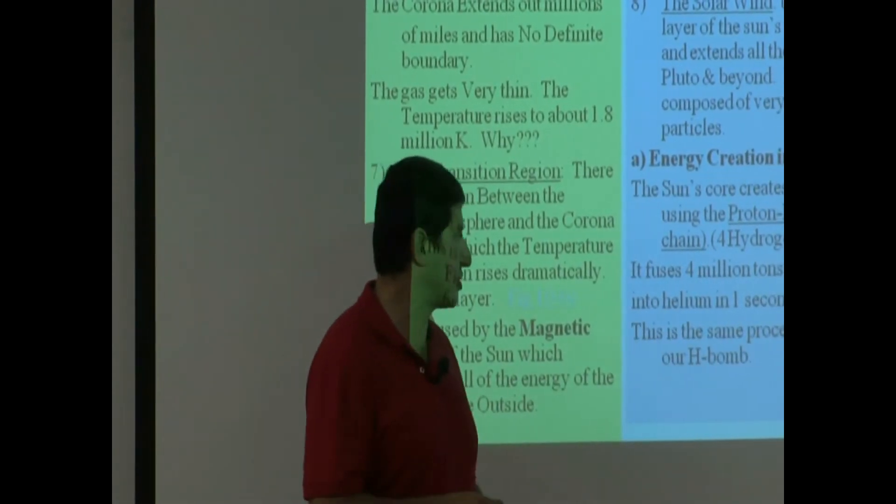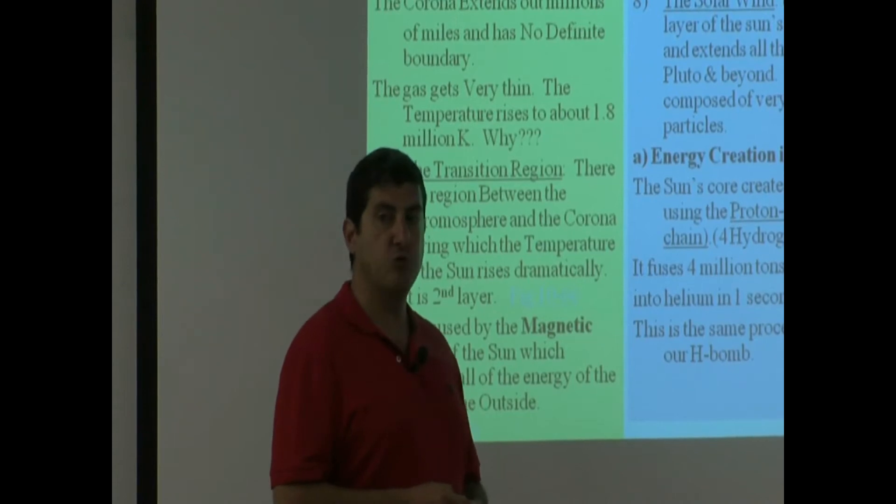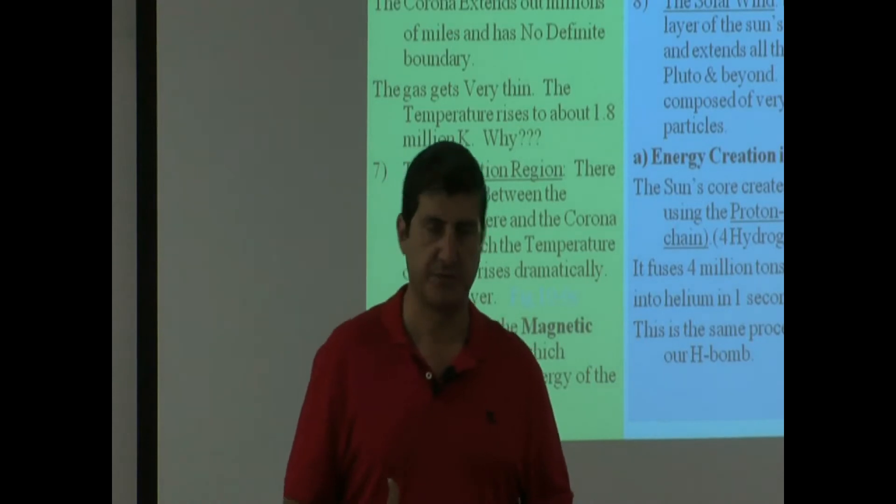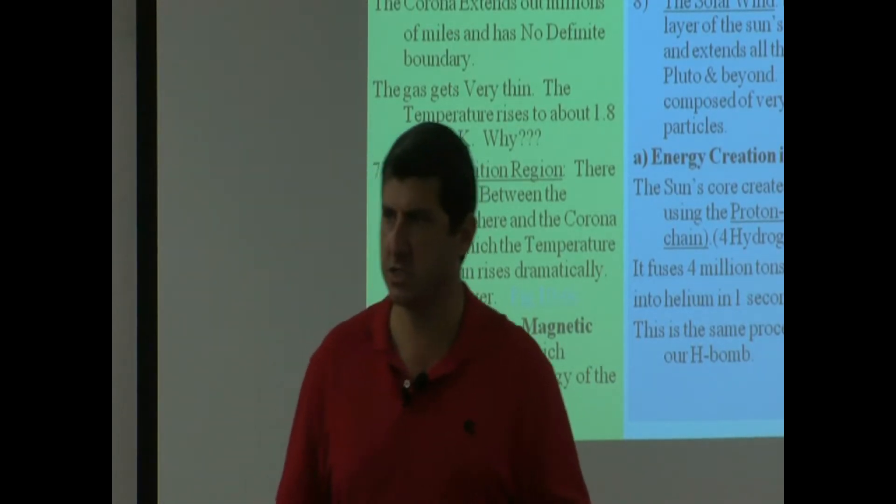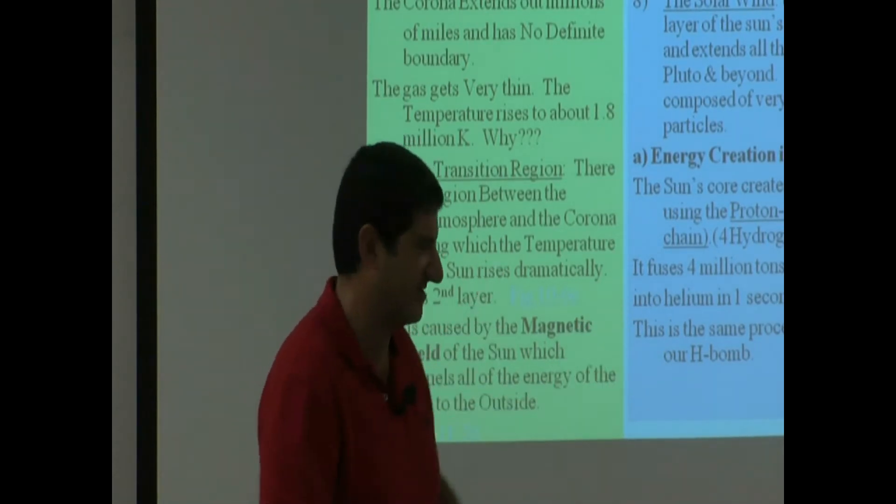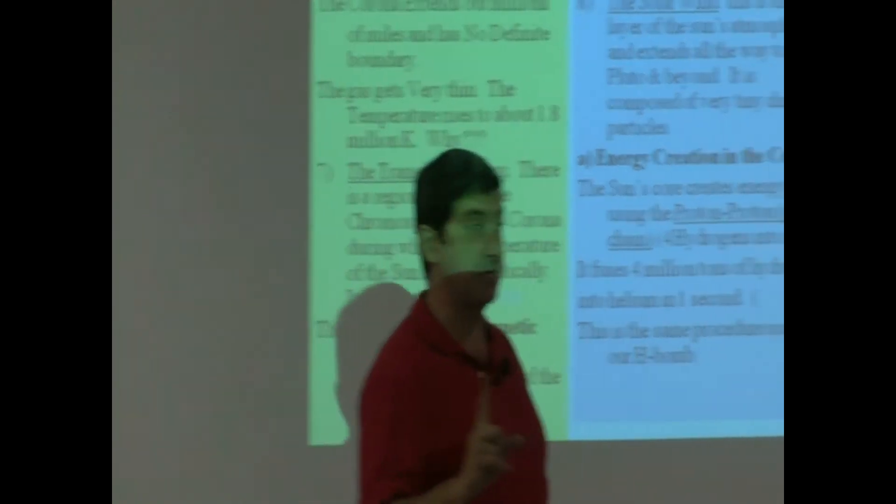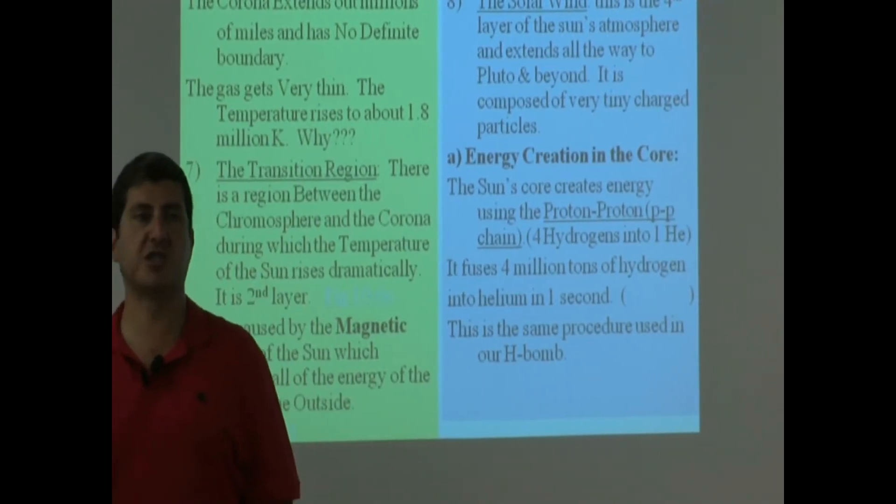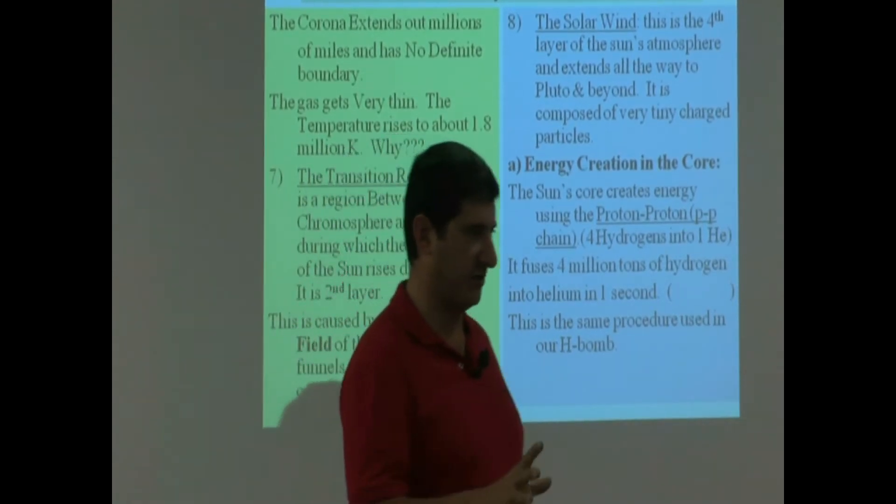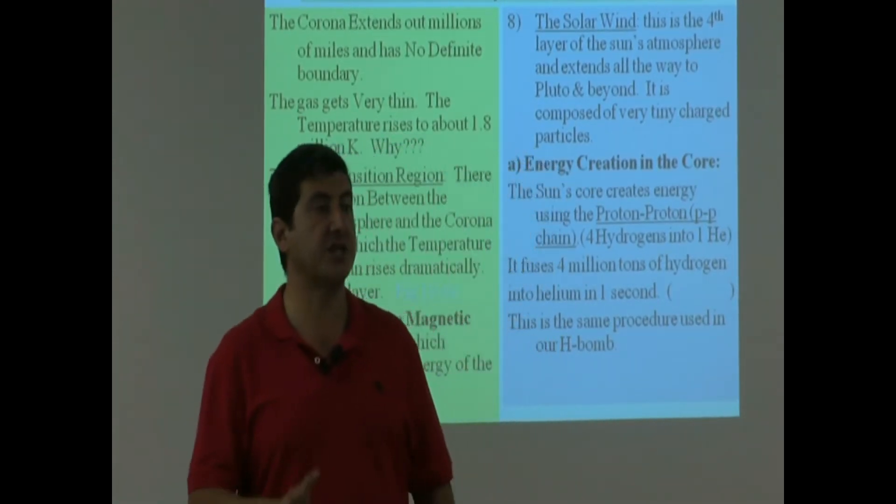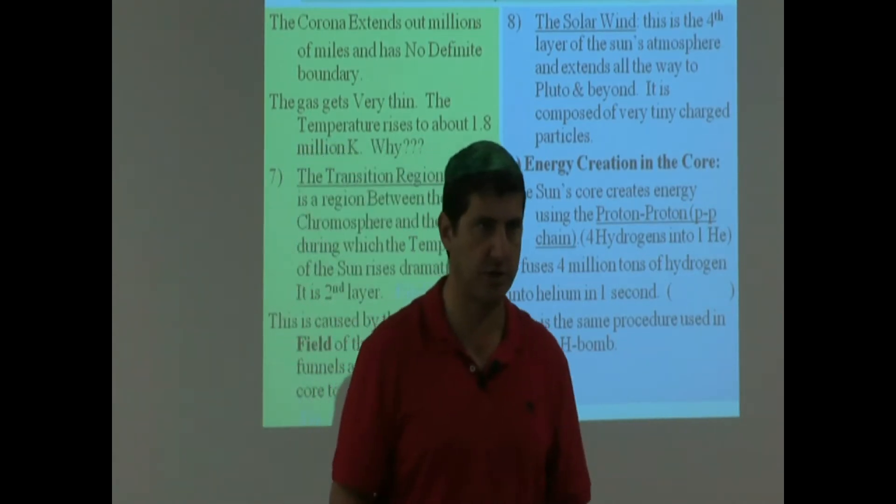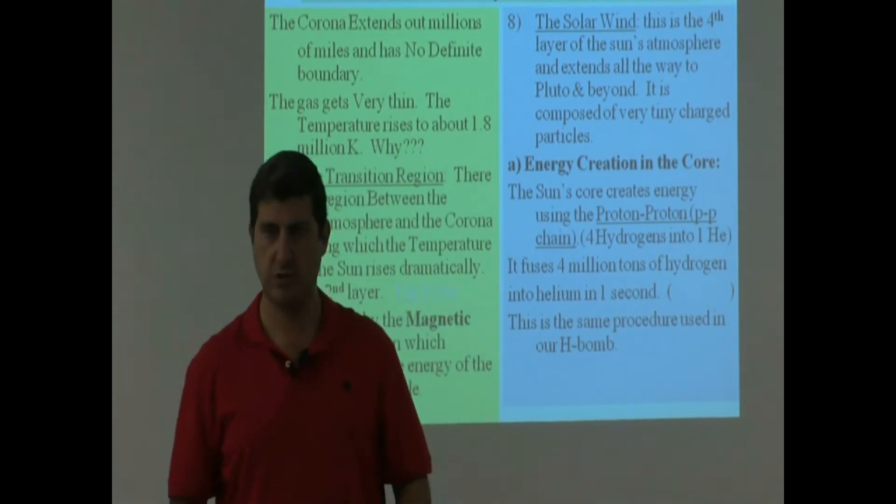So this is the same procedure that we used when we made the H-bomb. Have we used the H-bomb on anyone yet? No. Thankfully. Not yet. We've used the atomic bomb. Atomic bomb uses a completely different process. It's known as fission, atomic fission. Fission takes a uranium atom or plutonium atom, breaks it into parts. That's called fission, breaking it down.